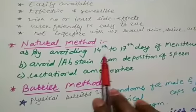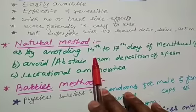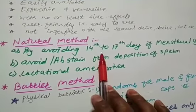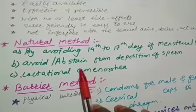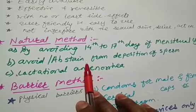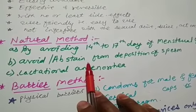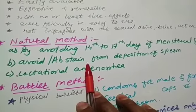Again we have started about the natural methods. In that also we have seen the periodic abstinence, that is first method. Then in second method we will see about that, it is also called as withdrawal method or coitus interruptus.